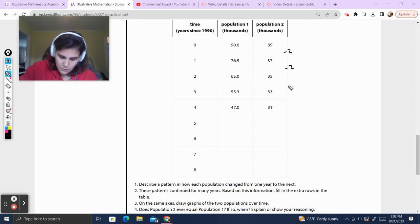Describe a pattern in how each population changed from one year to the next. 39 to 37 to 35. Well, I'm subtracting two for each of these guys. And then 90 to 76 to 65 to 55.3 to 47. Let's see what we're subtracting. So 90 minus 10 is 80 minus additional 3.5. So it's going to be minus 13.5. And then 76.5 down to 65 is going to be 11.5. And then 65 down to 55.3 is going to be 9.7. I don't see any pattern here. And I don't think it's a geometric pattern either.